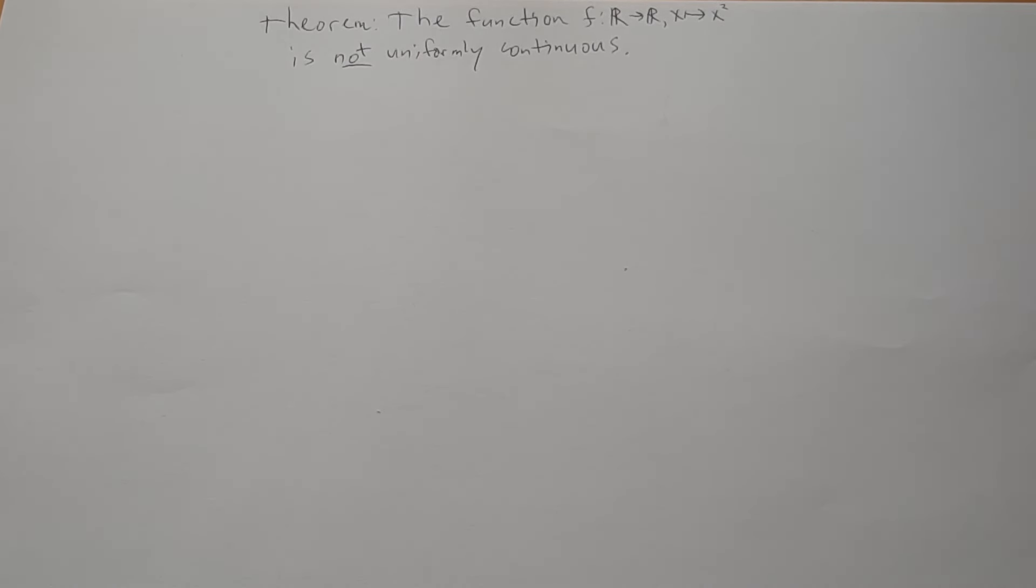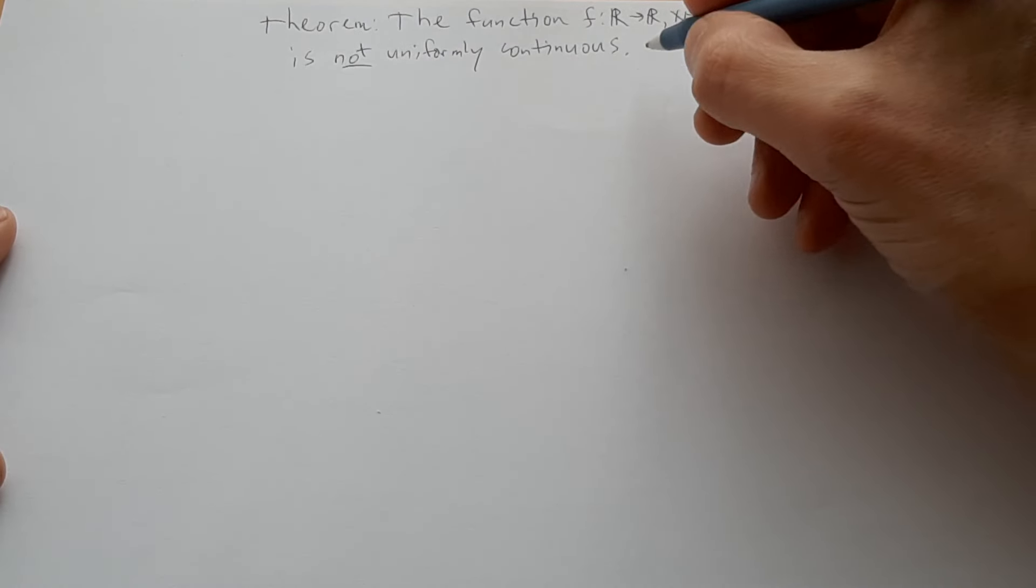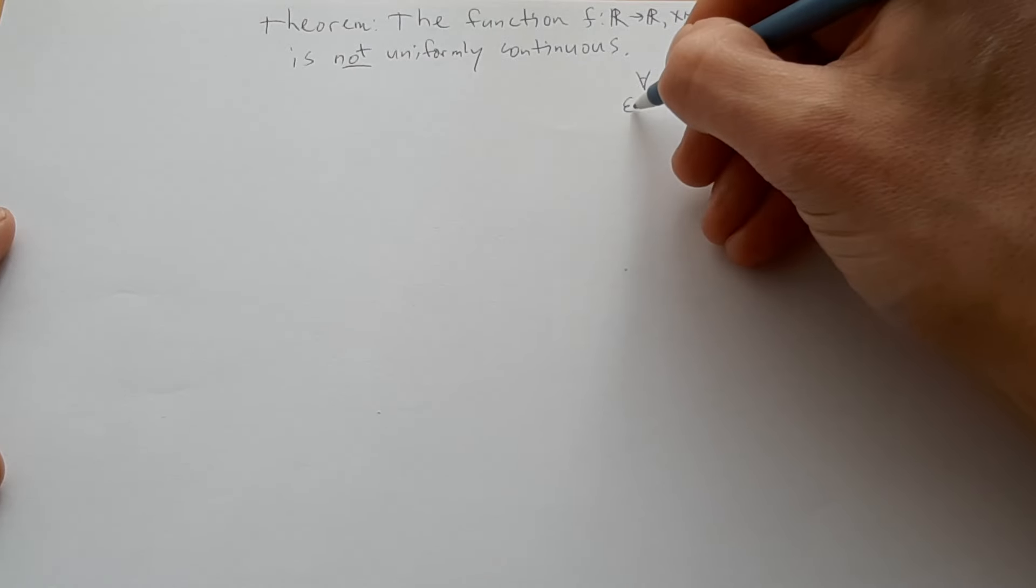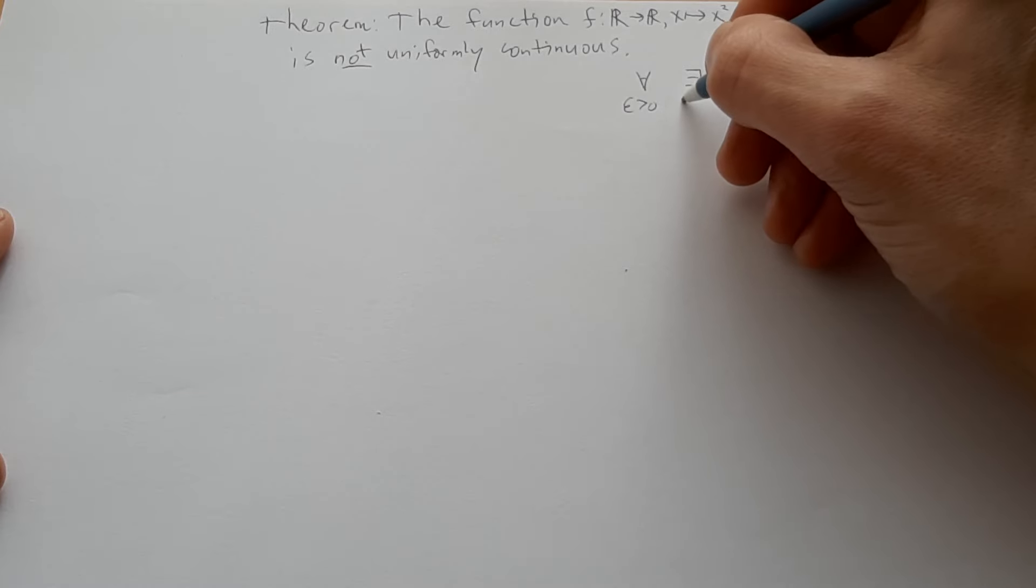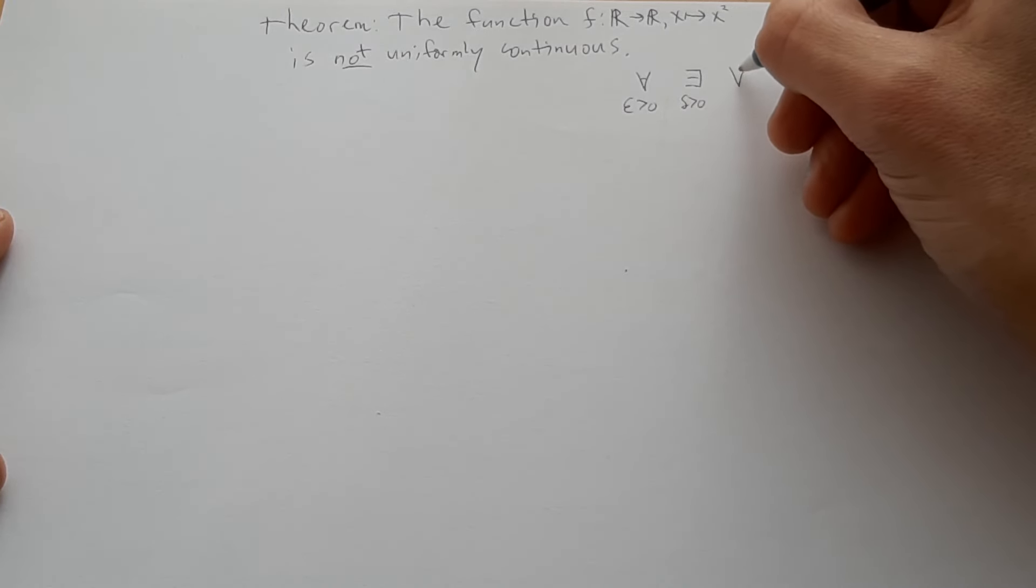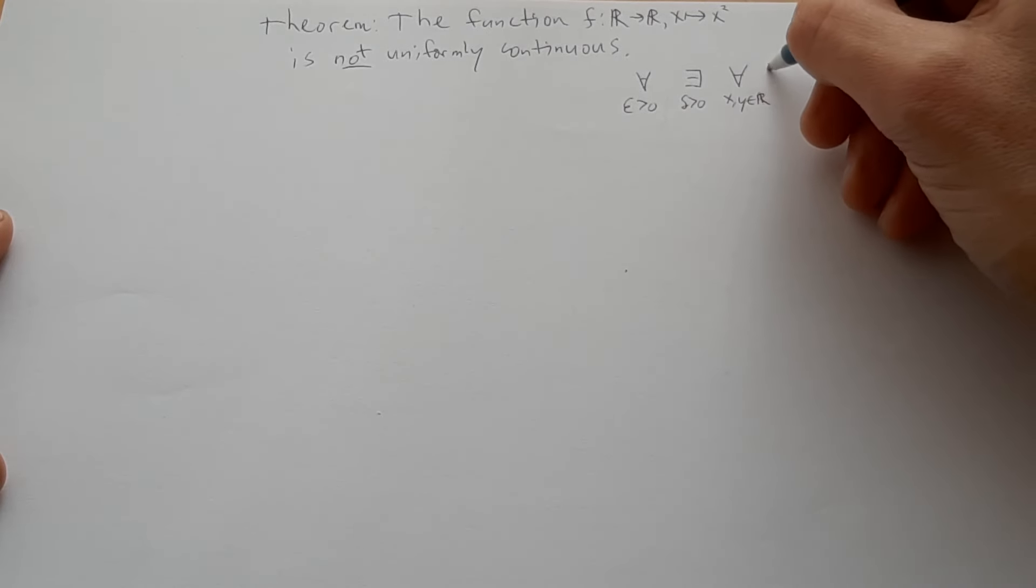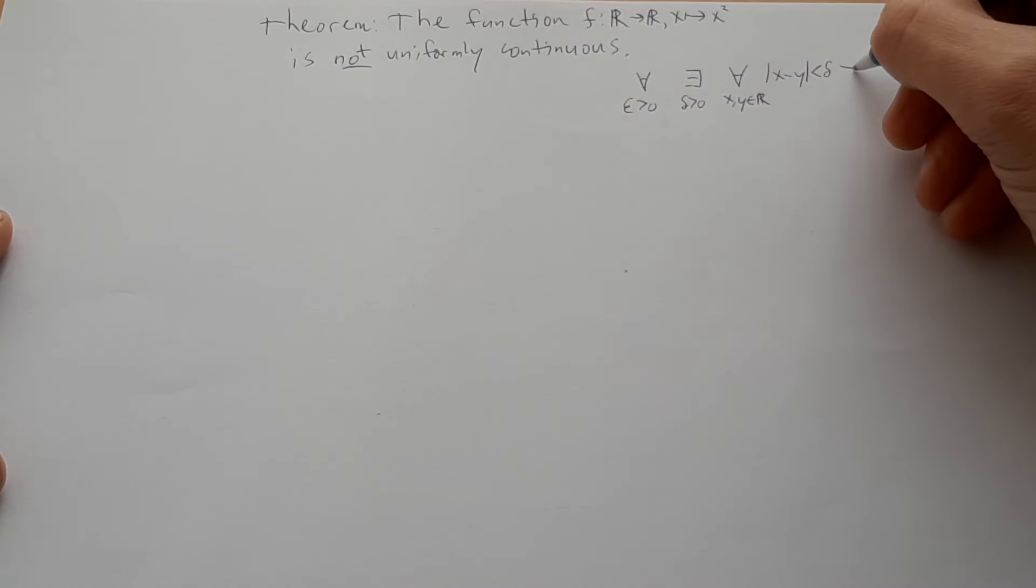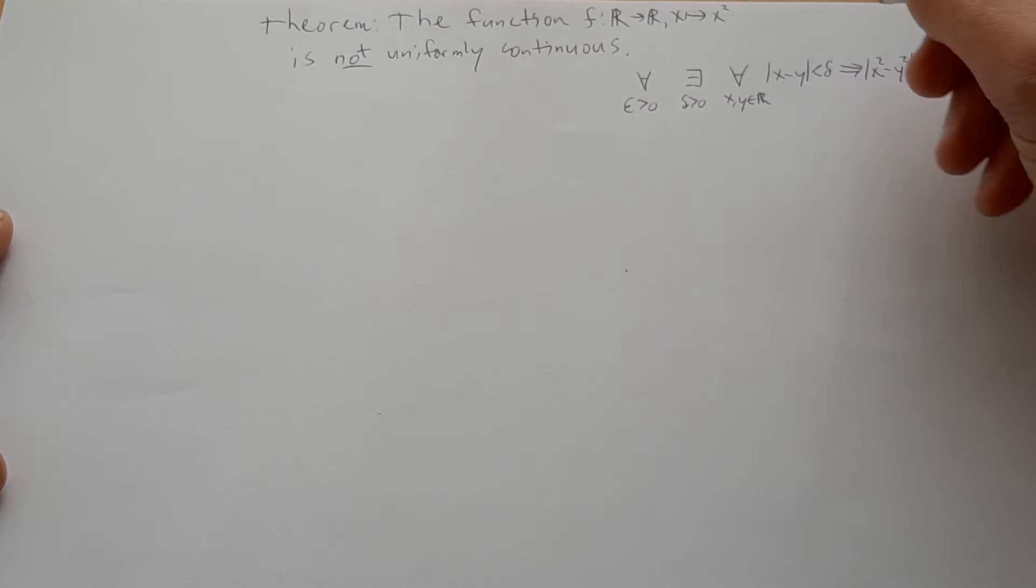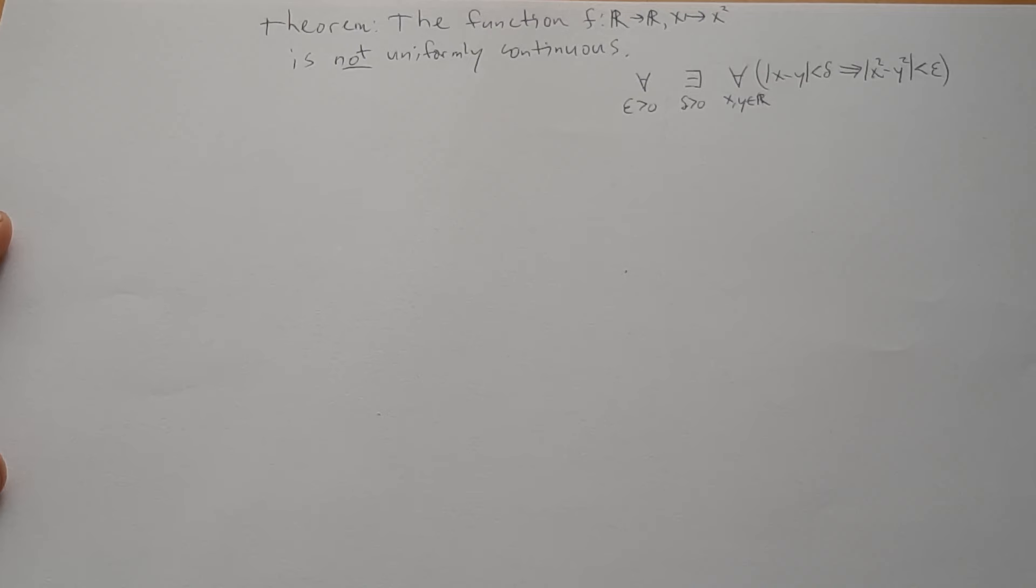So what does it mean to be uniformly continuous? Well, if we wanted to prove that it were uniformly continuous, we would want to show that for every epsilon greater than zero, there would be some delta greater than zero, such that for all real numbers x and y, we could show that if x and y were closer to each other than delta, then x squared and y squared would be closer to each other than epsilon. That's what we would want to show if we wanted to show that x squared were uniformly continuous.